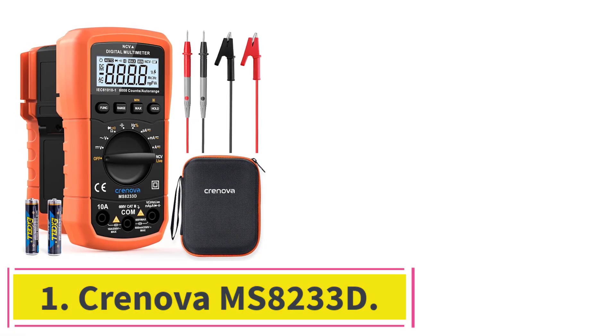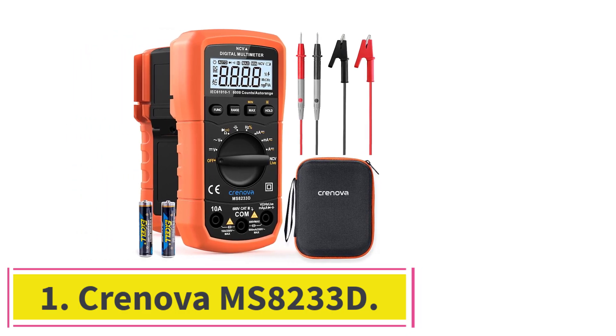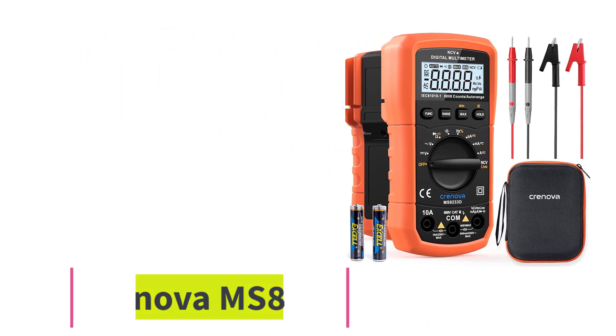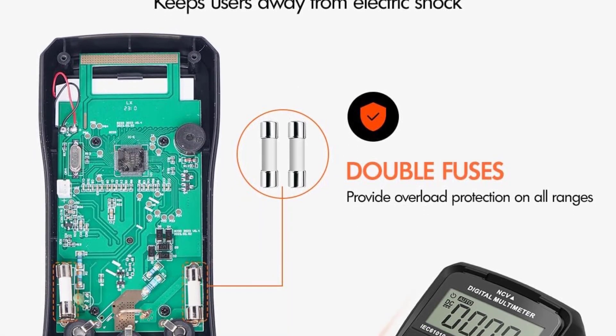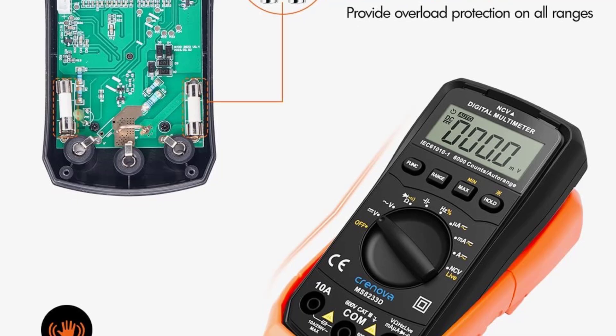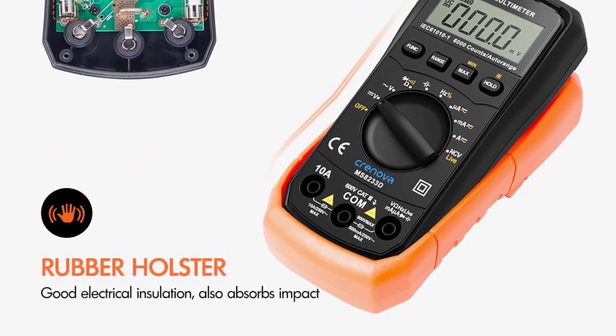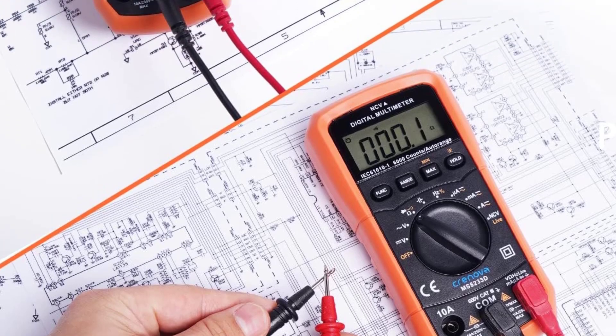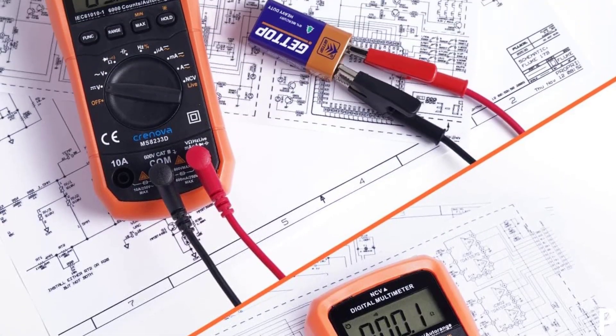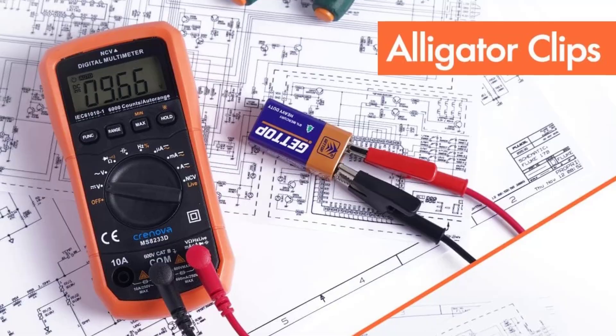Starting at number 1, Crinova MS8233D. We recommend the Crinova MS8233D for the majority of folks getting started with electrical projects as well as DIYers and homeowners with enough knowledge to safely take on smaller projects without the need for a contractor. This capable multimeter is jam-packed with functionality at a price that won't break the bank.